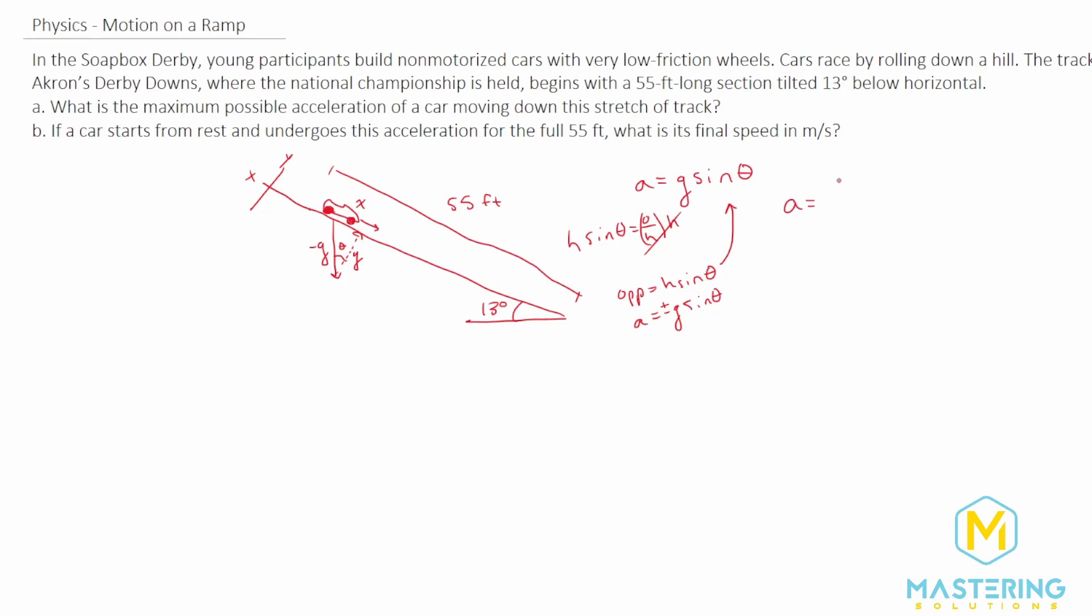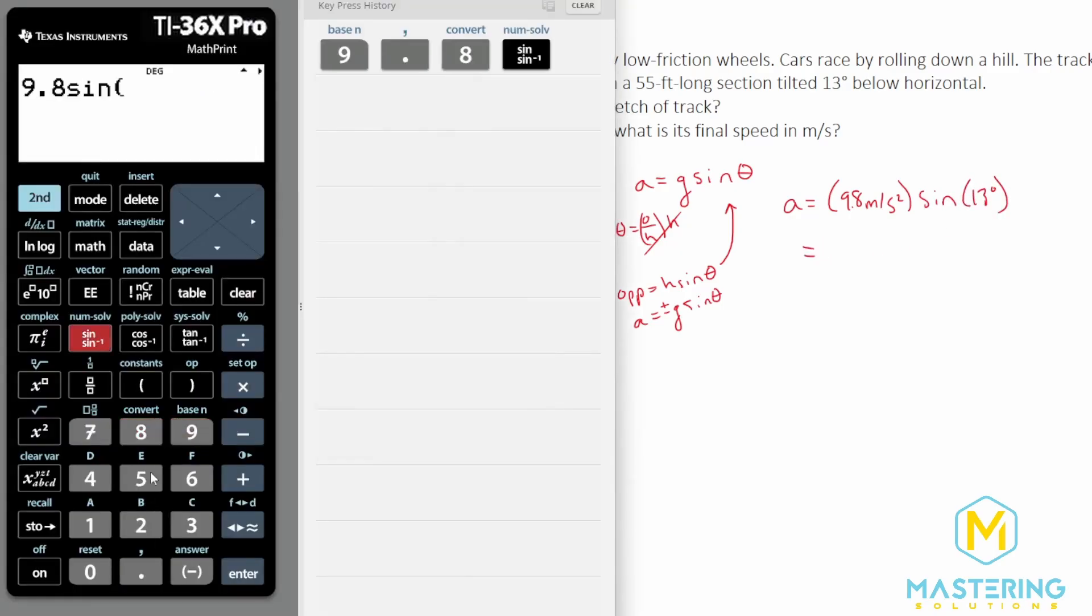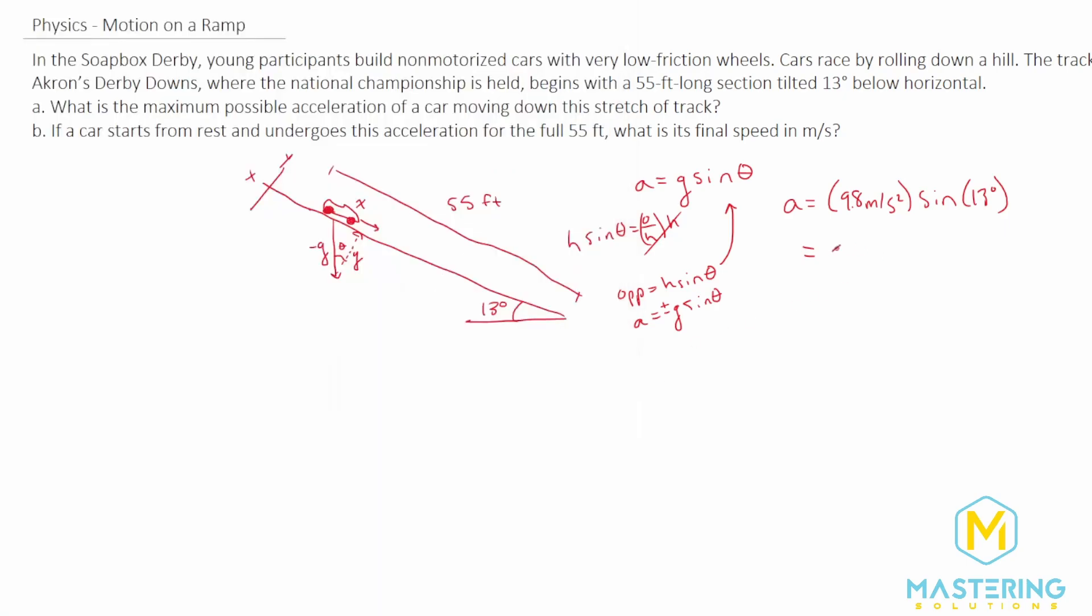Now let's plug in our values to that. So we have a positive 9.8 meters per second squared times the sine of the angle, which is 13 degrees. So we have 9.8 times the sine of 13, gives us 2.205, so we'll round that to 2.2 meters per second squared. So this is the maximum acceleration given this hill that we could get in one of these cars, and that is part A.